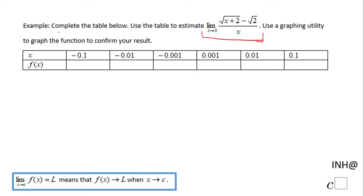We're going to do that by completing the table below and also we're going to take a look at the graph to see if our numerical result matches the graph. So how are we going to do the numerical way? We're going to take these values and I'm going to start with negative 0.1.